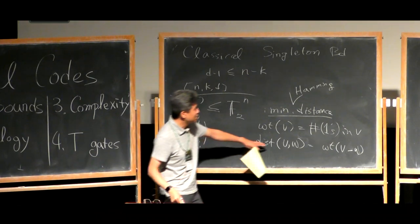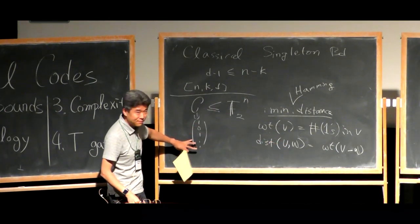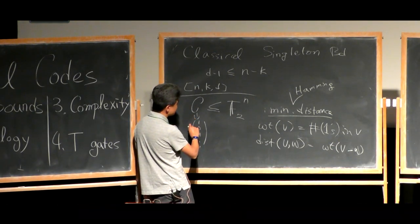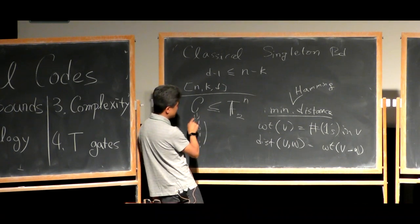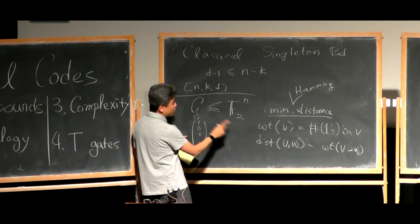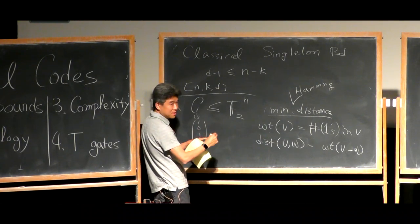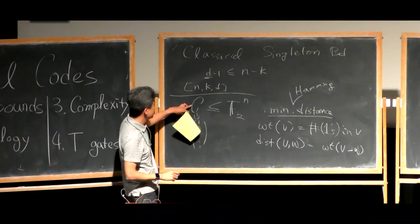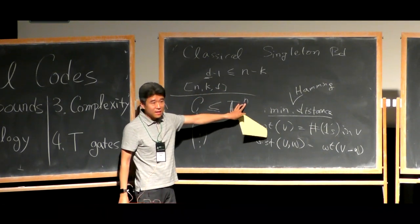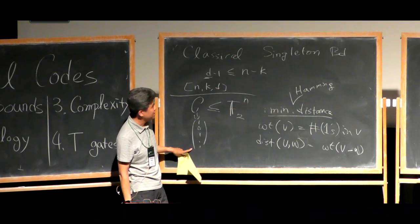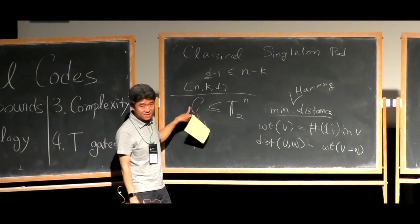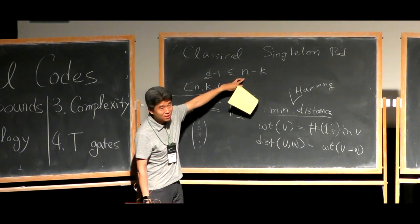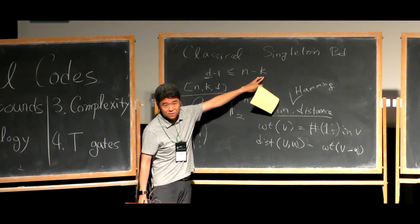You count the number of positions where V and W are different. Since this is a linear code, the minimum distance is going to be the minimum weight of a non-zero vector, which is a distance from the all-zero vector to a non-zero vector. That parameter is D, the minimum distance of C. N is the ambient dimension — the number of components in the codeword. K is the linear space dimension of C.